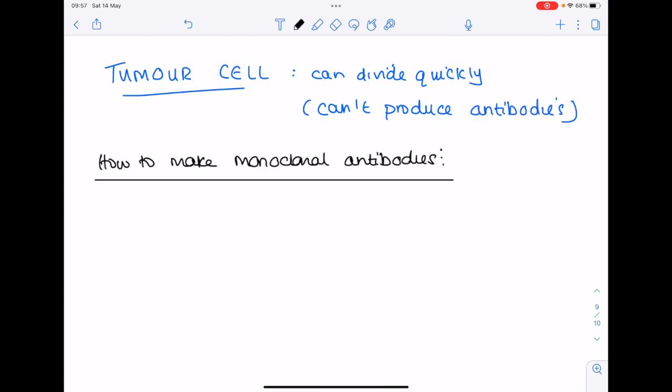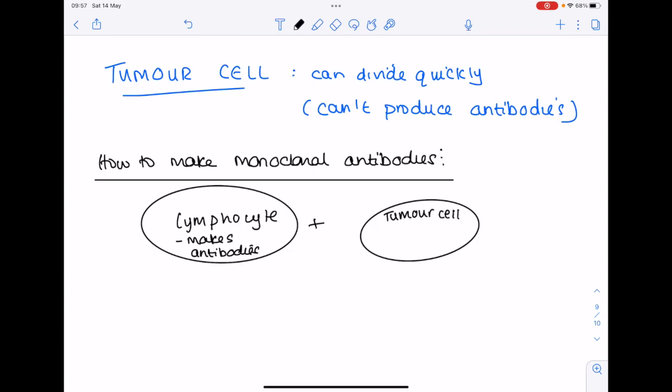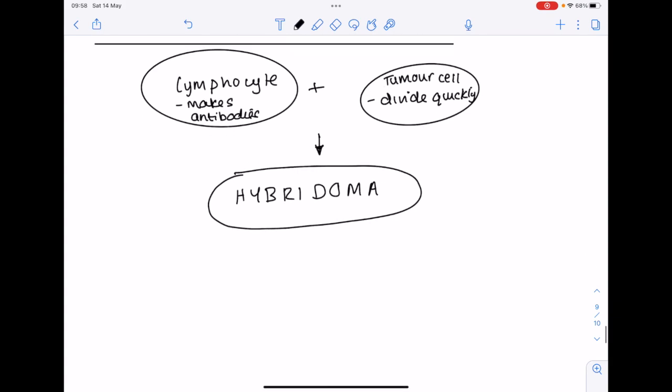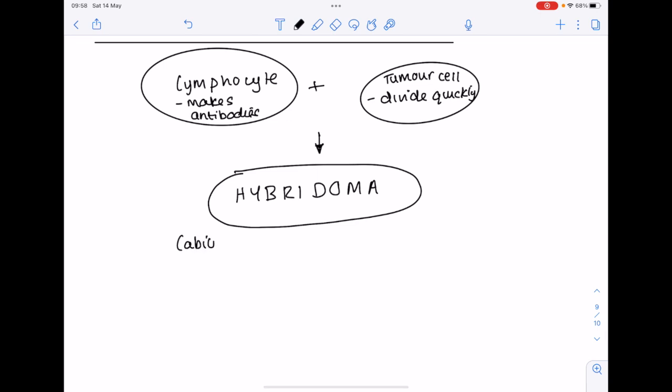But now let's consider how do we make monoclonal antibodies? Well let's solve the problem from before. We had a lymphocyte which can make antibodies but can't divide. What about if we were to add it to a tumor cell which can divide quickly? So we've got two very useful properties here.